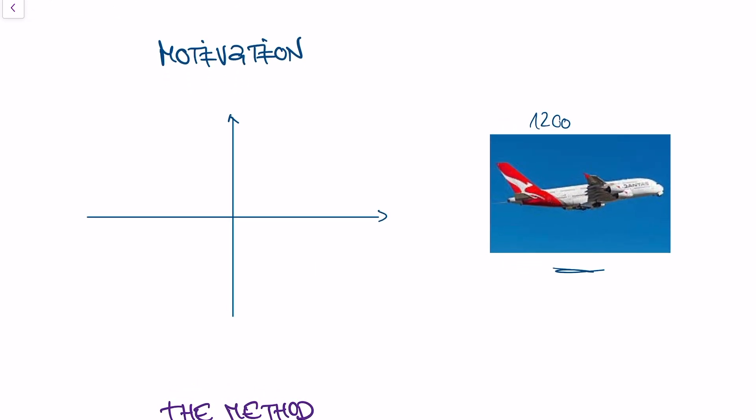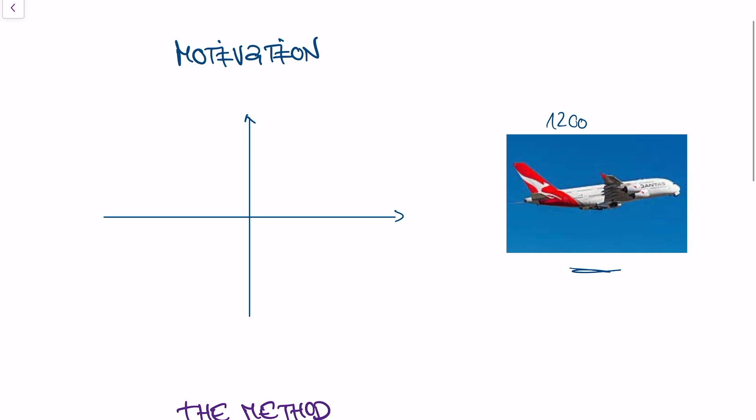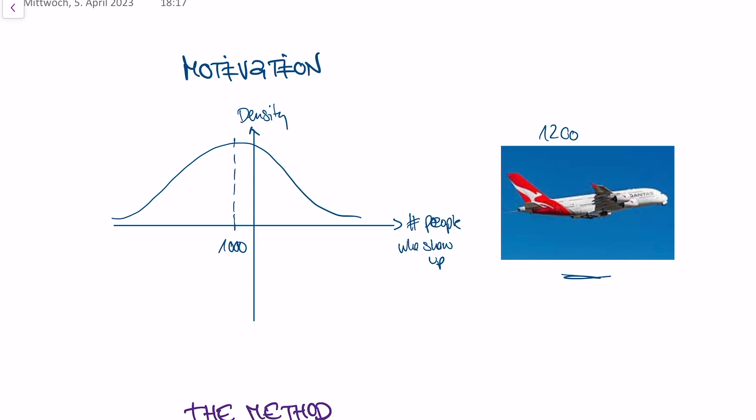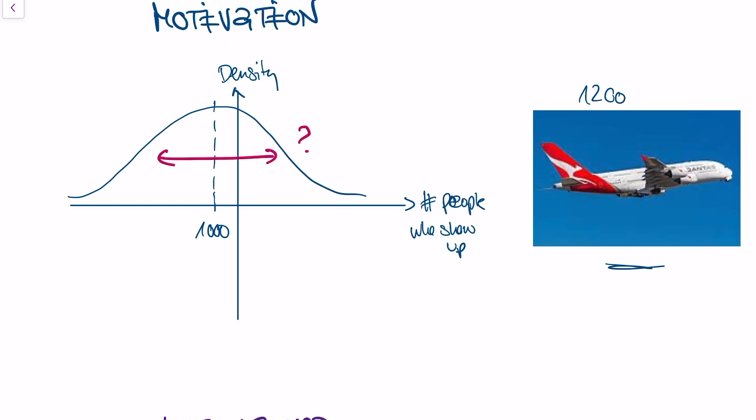Not everybody shows up before departure. You know that the people who show up are actually normally distributed. So they follow this distribution, and on the x-axis I have the people who show up, number of people who show up. And on the y-axis I have the density. And you know that on average 1,000 people show up. But what you don't know is you don't know the variance of this distribution.